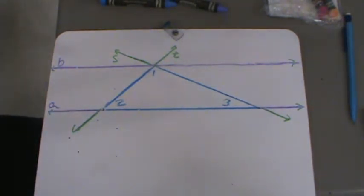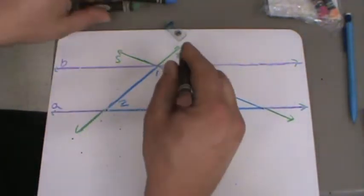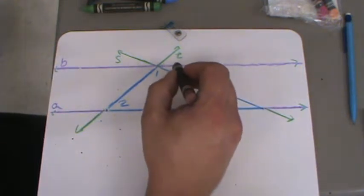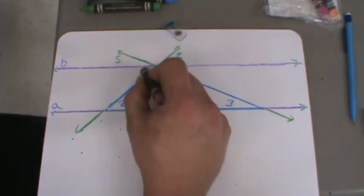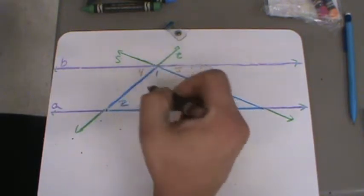Alright, so we have those two transversals and we know some properties about transversals and parallel lines. Let's take a closer look at this angle here. Let's call this angle angle 5 and we'll call this angle 4.